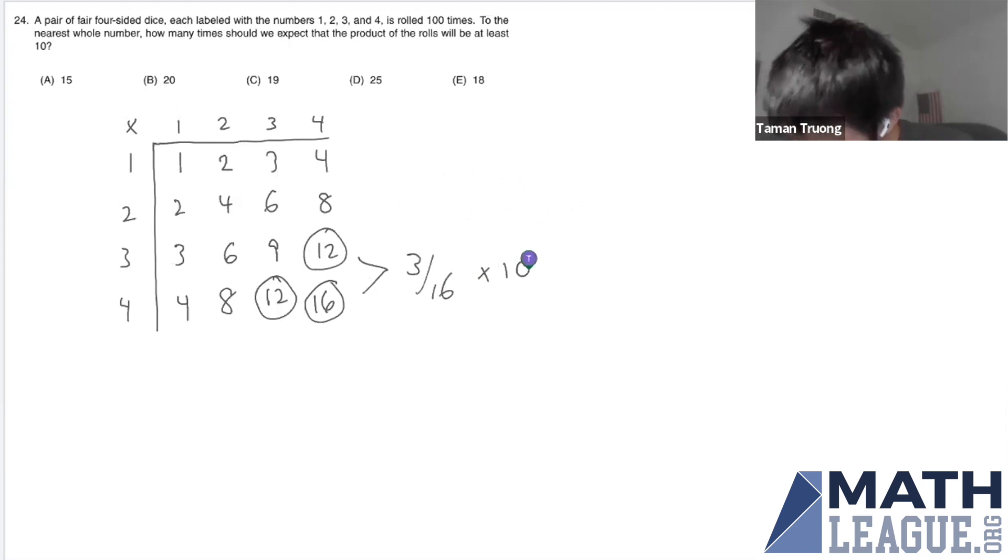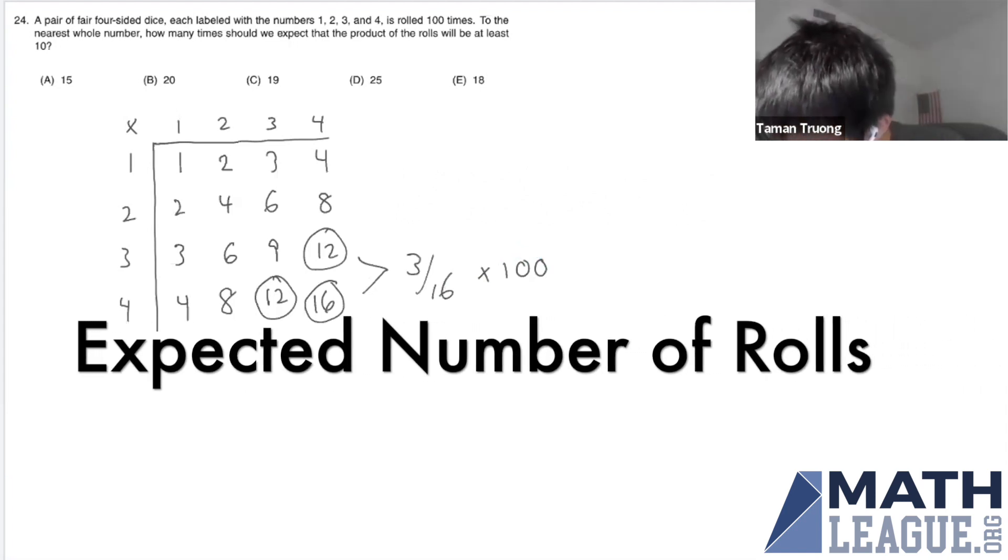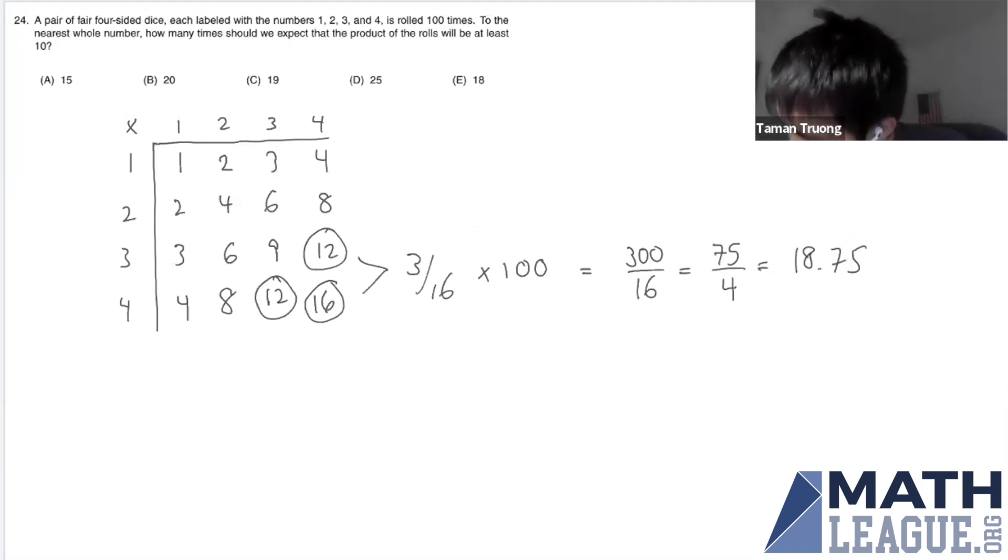We just need to multiply that by 100 to get our expected number of rolls. Here we get 300 over 16. We get 3 over 4, and dividing we get 75 over 4. As a decimal, that's 18.75. We're asked to round this to the nearest whole number, so this is approximately 19, and that is answer choice C.